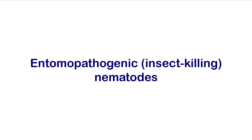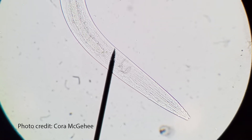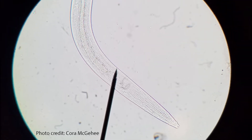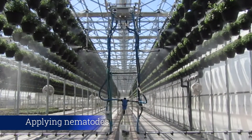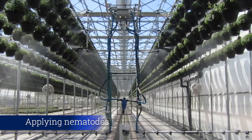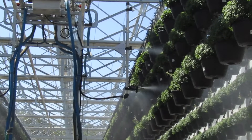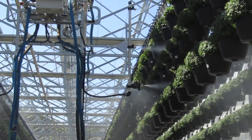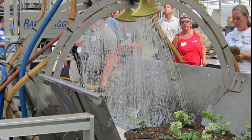Entomopathogenic nematodes are microscopic roundworms that enter the insect's body through openings in the exoskeleton. The nematodes multiply inside the host insect and release a bacterium that is toxic to the host.